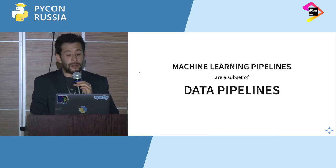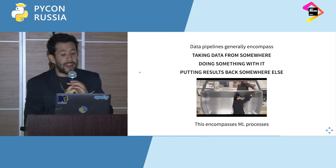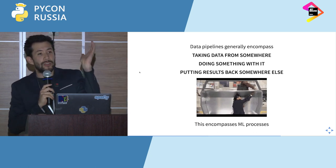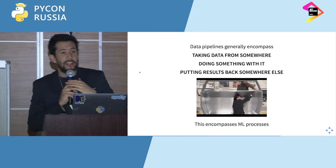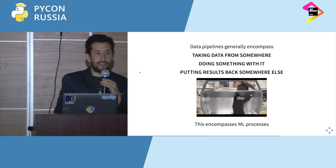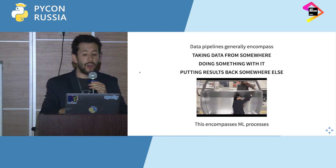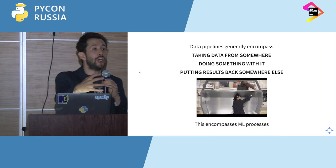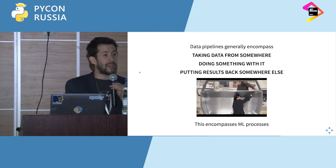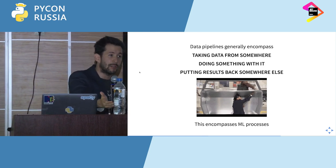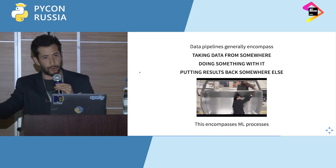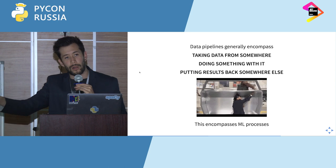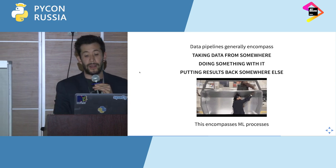Machine learning pipelines could be said to be a subset of data pipelines. Data pipelines is a very generic term which basically stands for anything requiring taking data from somewhere, doing something with it, and putting the results back somewhere else — basically ETL sort of workflows. This encompasses the machine learning process because the 'doing something' part could be sending it to a prediction engine and getting results back. So the ML pipeline could be just one part of the many things a data pipeline does.